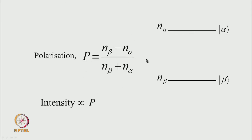We can define a quantity called polarization as (n_beta − n_alpha) / N_total, where n_alpha and n_beta are the number of spins in alpha and beta levels and N_total is the total number of spins. The EPR signal intensity depends on the population difference — if these two are equal we will not get any signal — so intensity is proportional to polarization. When polarization is positive we get a net absorptive signal; when polarization is negative we get an emissive signal.